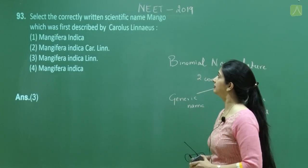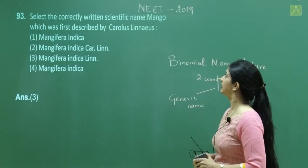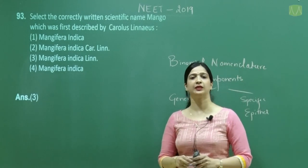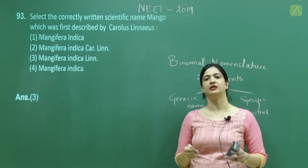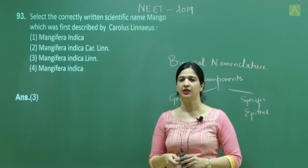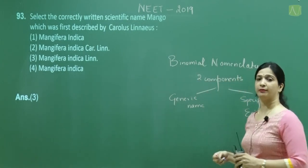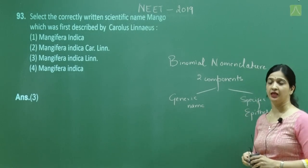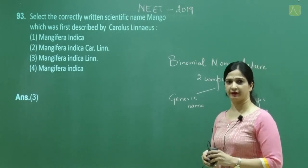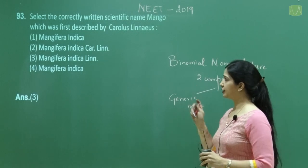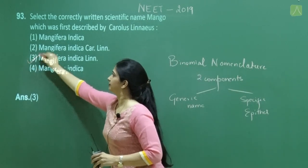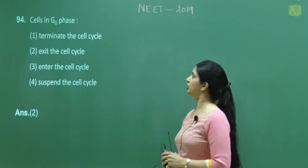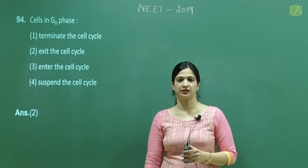Question number 93: Select the correctly written scientific name of mango, first described by Carolus Linnaeus. As we know, Carolus Linnaeus gave the concept of binomial nomenclature, which consists of two components: a generic name and the specific epithet. It may also include the author name. The correct option is 3.